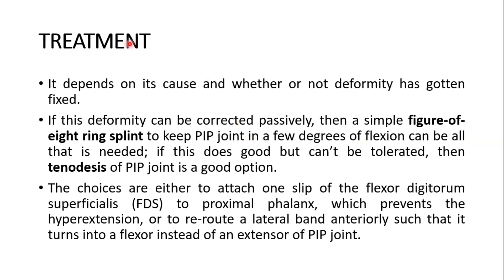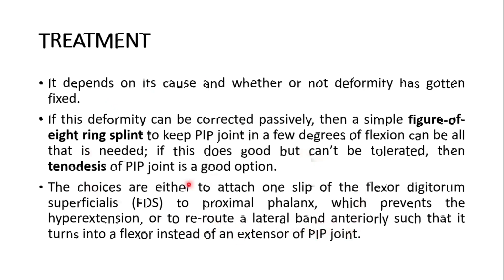Treatment of the swan neck deformity depends on its cause and whether the deformity has gotten fixed. If the deformity can be corrected passively, then a simple figure-of-eight ring splint to keep the proximal interphalangeal joint in a few degrees of flexion may be all that is needed. If this does good but cannot be tolerated, then tenodesis of the proximal interphalangeal joint is a good option. The choices are to attach one slip of the flexor digitorum superficialis to the proximal phalanx to prevent hyperextension, or to reroute a lateral band anteriorly so it acts as a flexor instead of an extensor of the proximal interphalangeal joint.